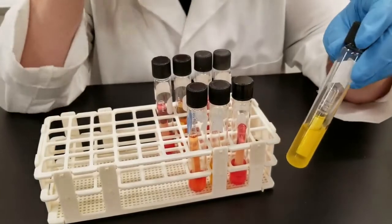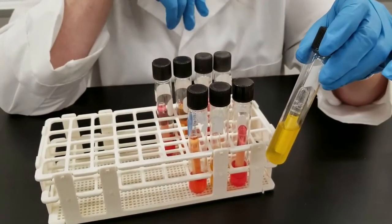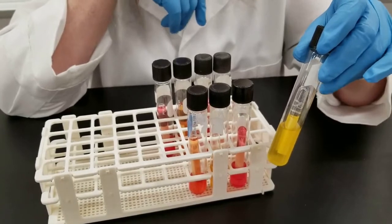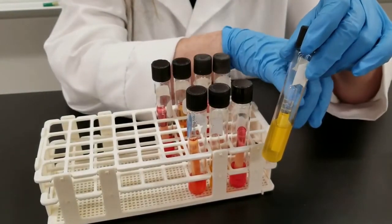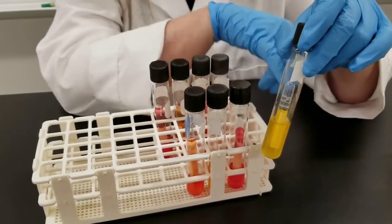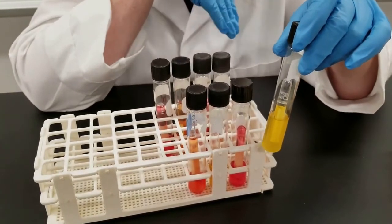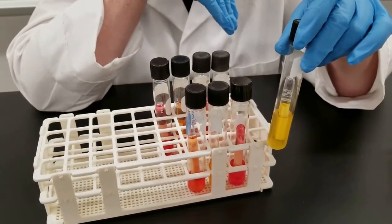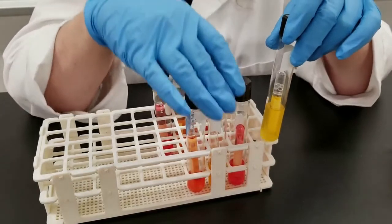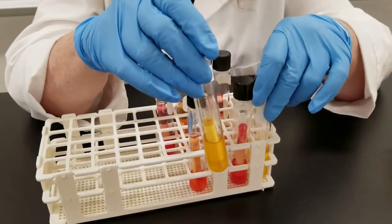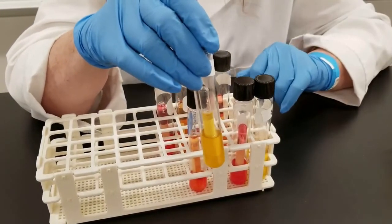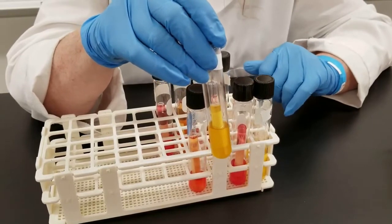In this tube, you can definitely tell, it has turned yellow, that would be positive for acid. And then if you look at the inverted tube, you can see there's an air bubble in there. So that is positive for gas. So you would record that as A/G or acid and gas. This tube here would also be recorded as acid plus gas production.